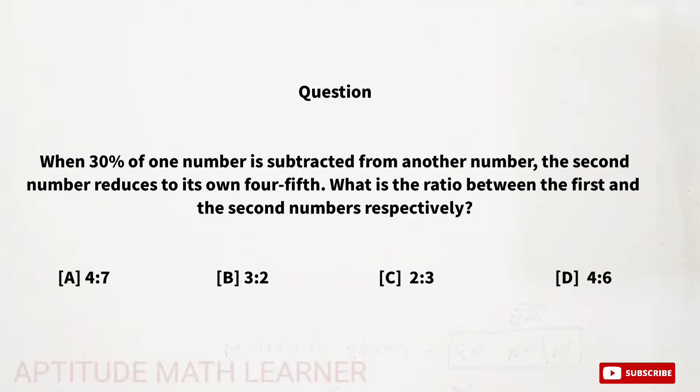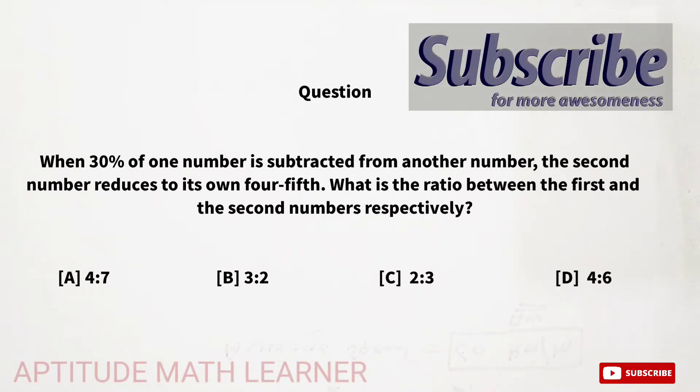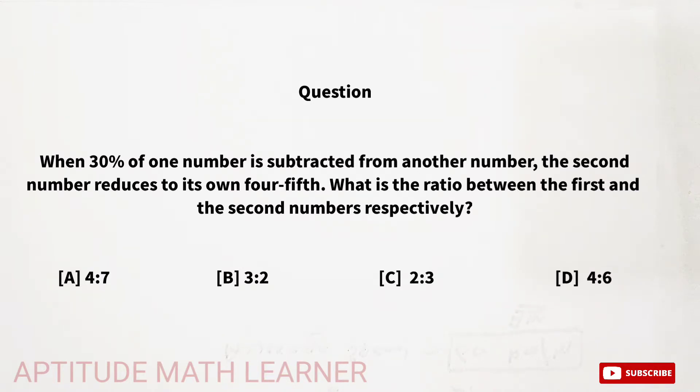Hello and hi to my YouTube channel Aptitude Math Learner. Today we have the question: When 30% of one number is subtracted from another, the second number reduces to its four-fifth. What is the ratio between the first and second number respectively?